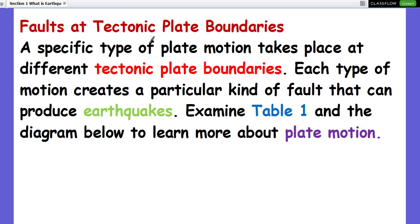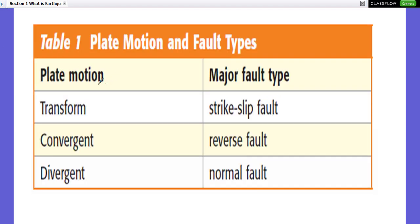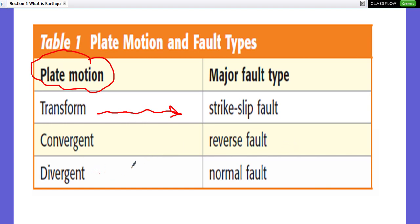Faults at tectonic plate boundaries: a specific type of plate motion takes place at each different tectonic boundary. There are three kinds of boundaries: transform, convergent, and divergent. Each type of motion creates a particular kind of fault that can produce earthquakes. At a transform boundary there is a strike-slip fault with horizontal movement; at a convergent boundary there is a reverse fault; and at a divergent boundary there is a normal fault.